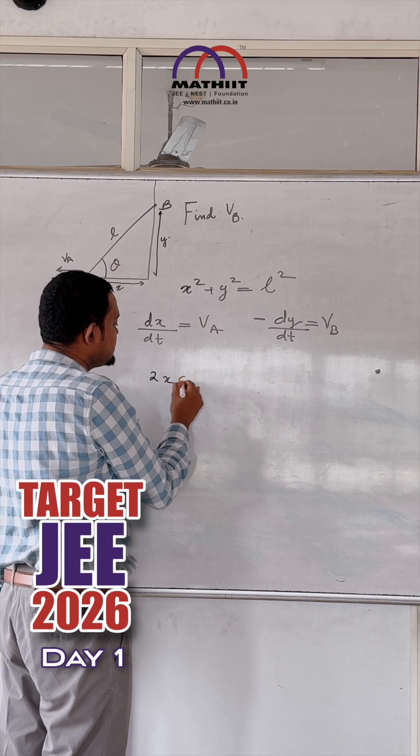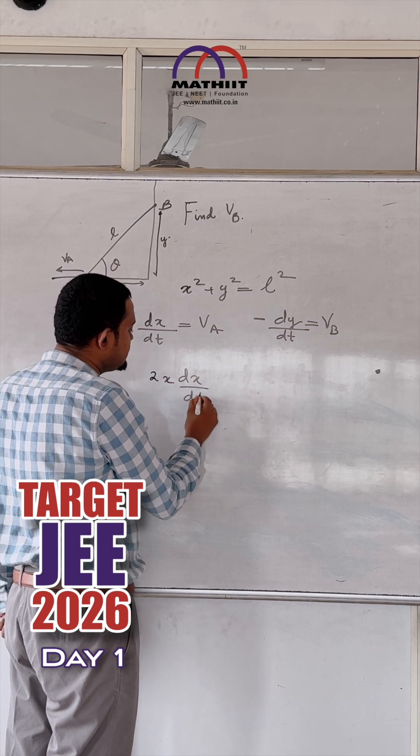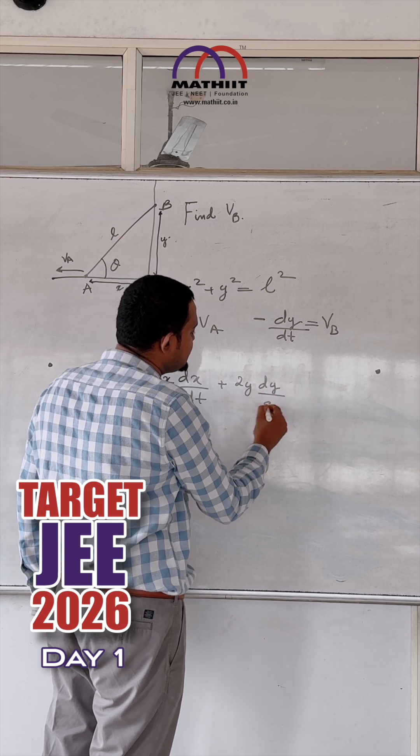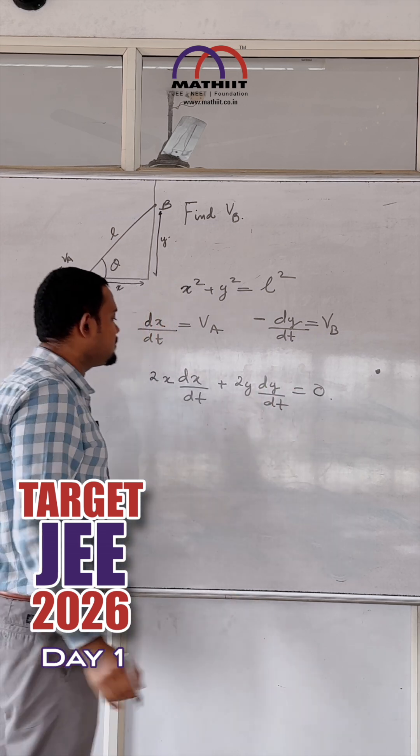We get 2X DX by DT plus 2Y DY by DT is equal to 0.